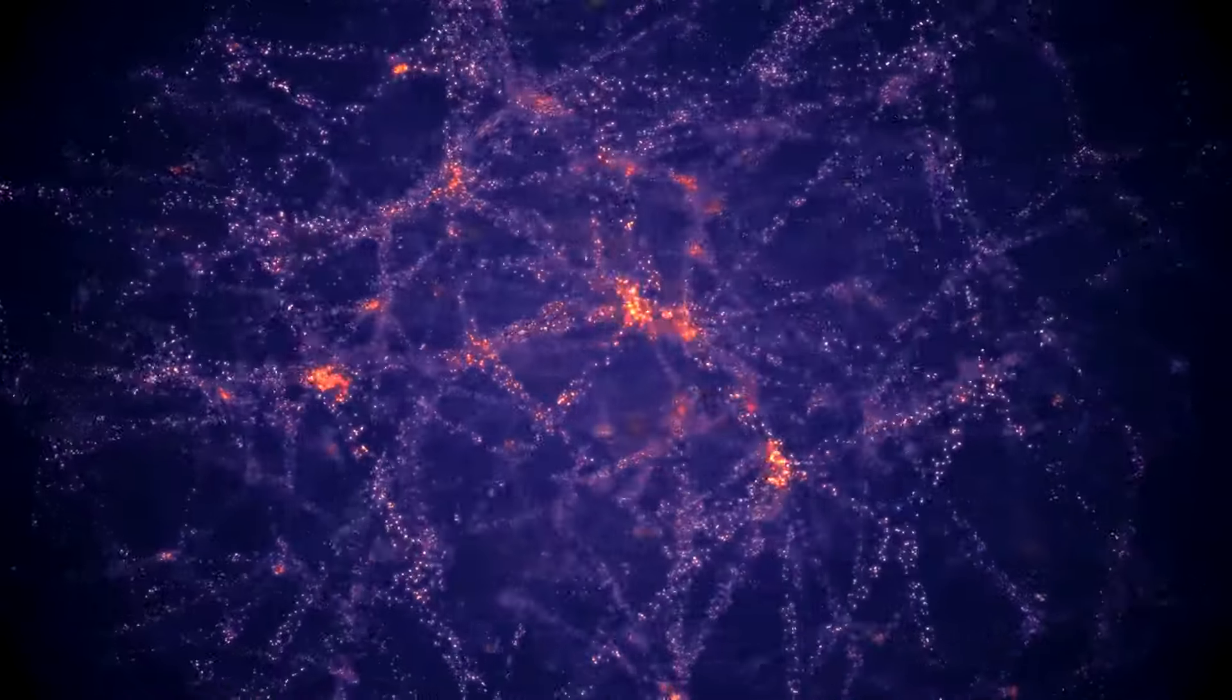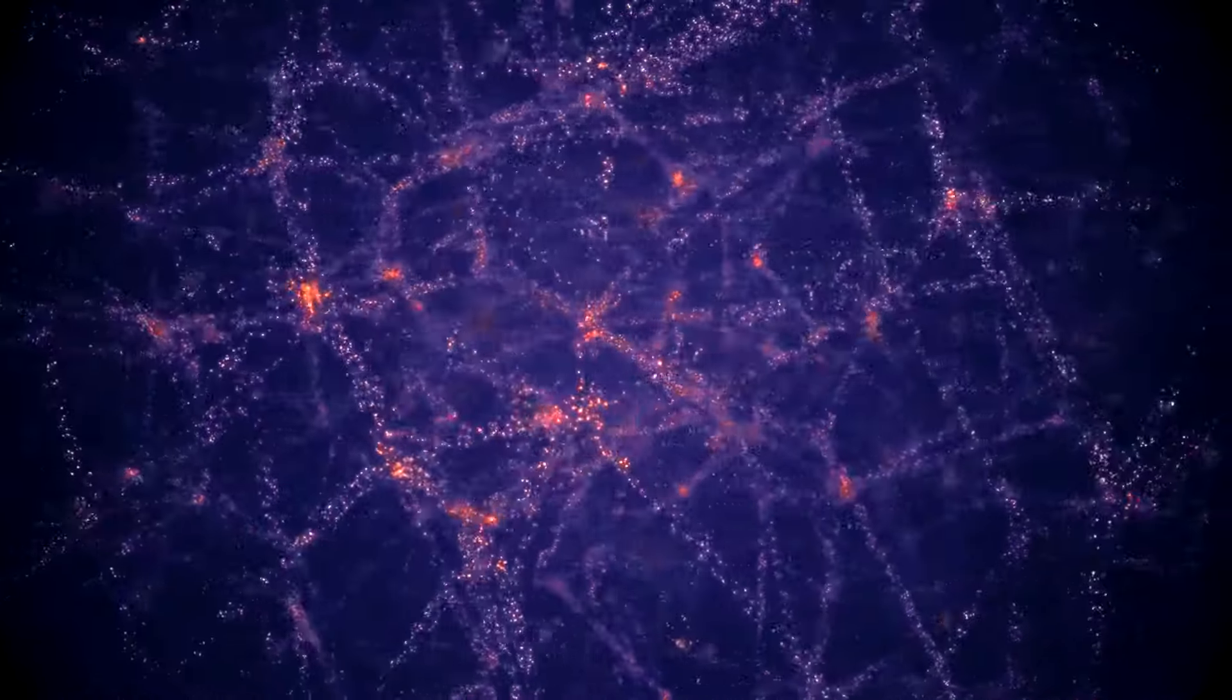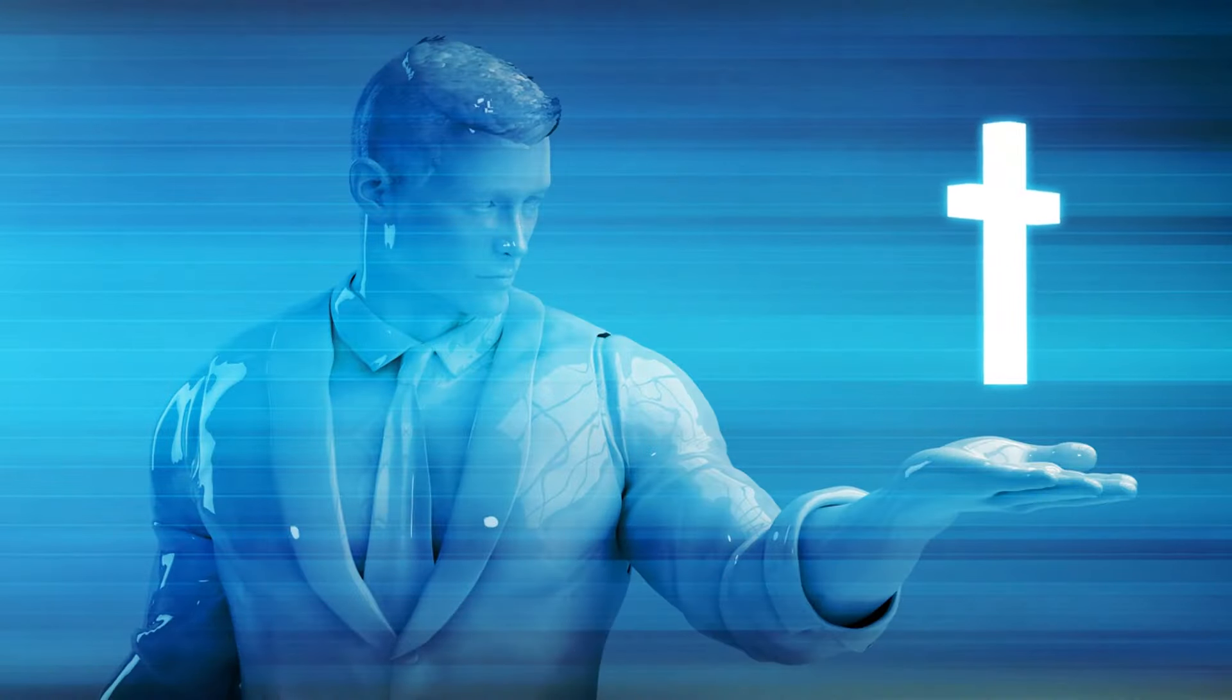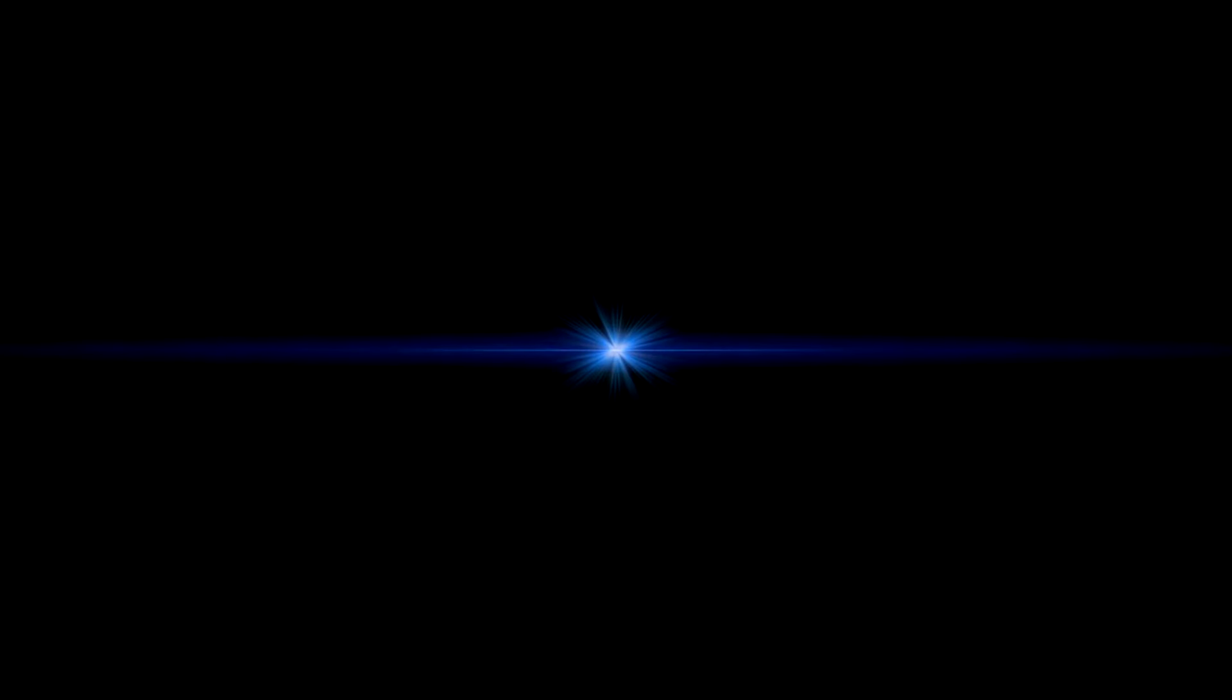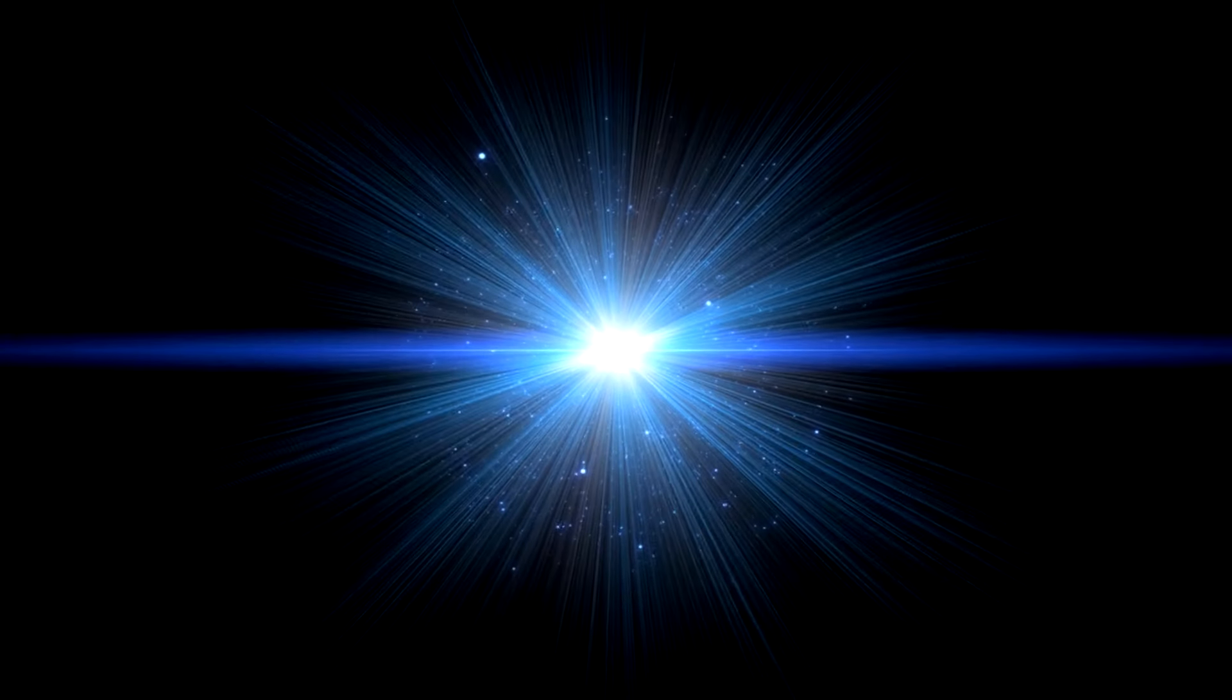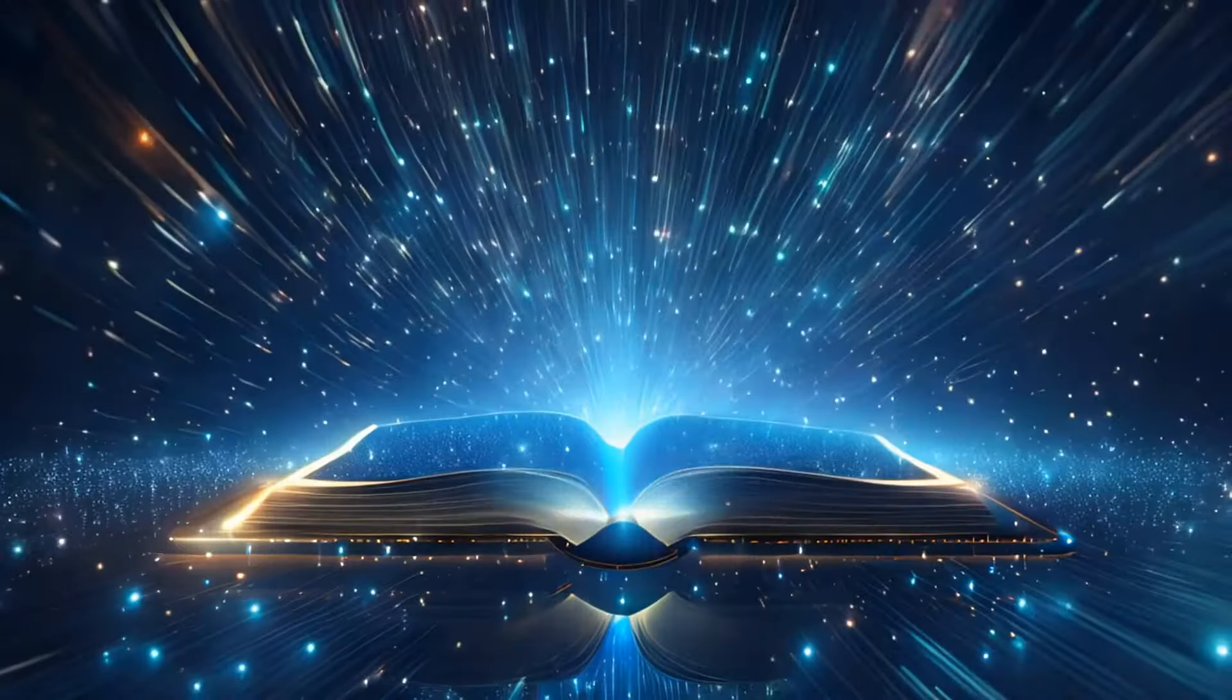One notable historical example is the shift from the geocentric model, which placed the Earth at the center of the universe, to the heliocentric model, which correctly identified the Sun as the center of our solar system. This paradigm shift was met with considerable resistance, yet it fundamentally changed our understanding of the cosmos and our place within it.